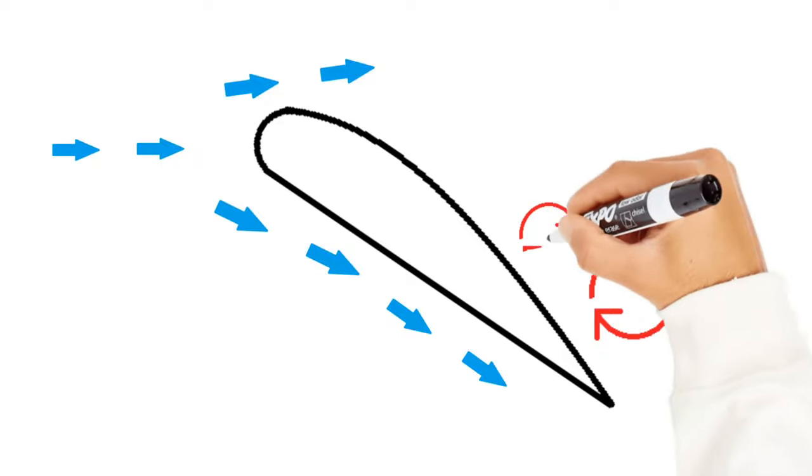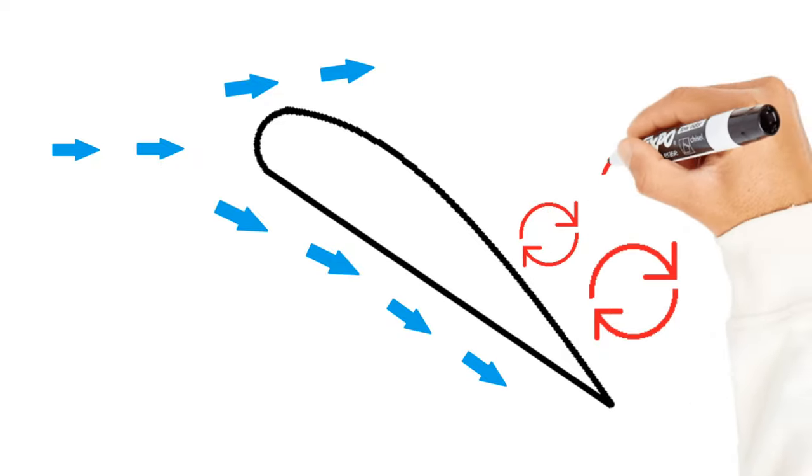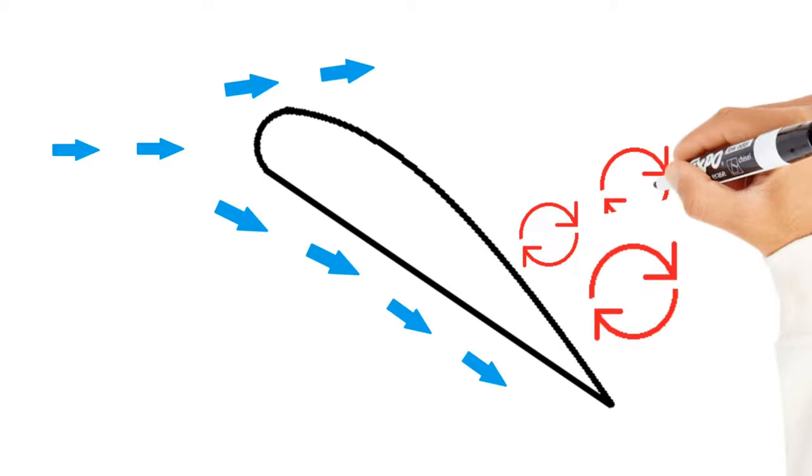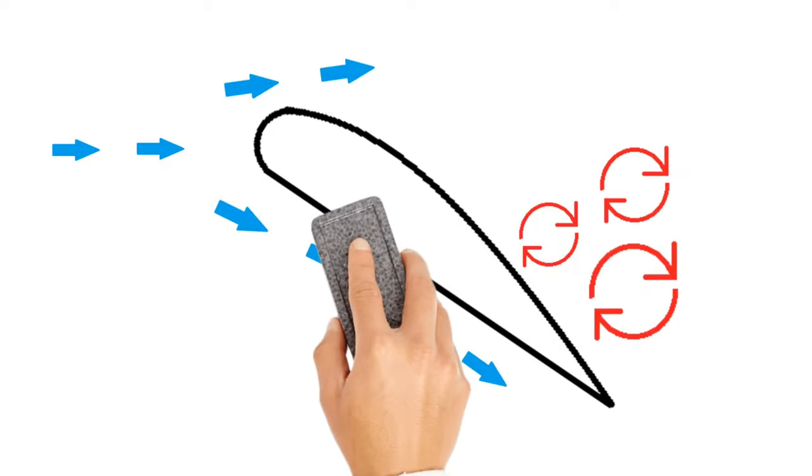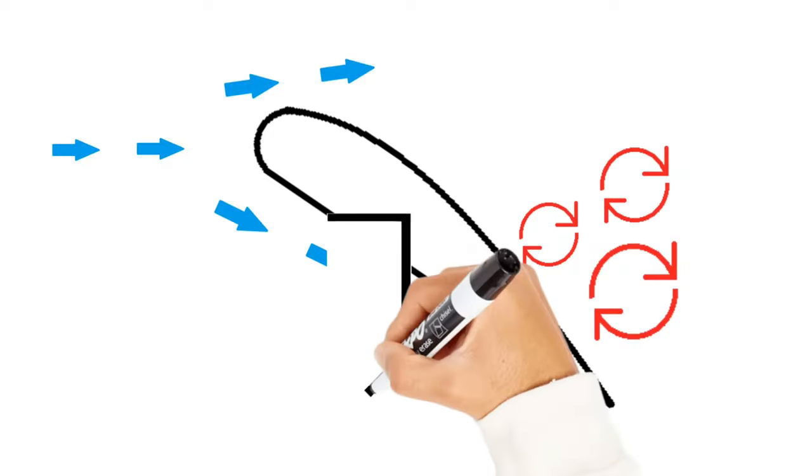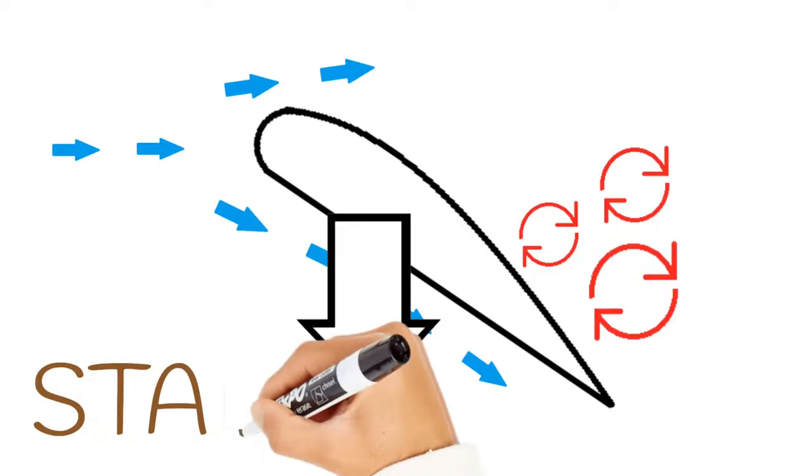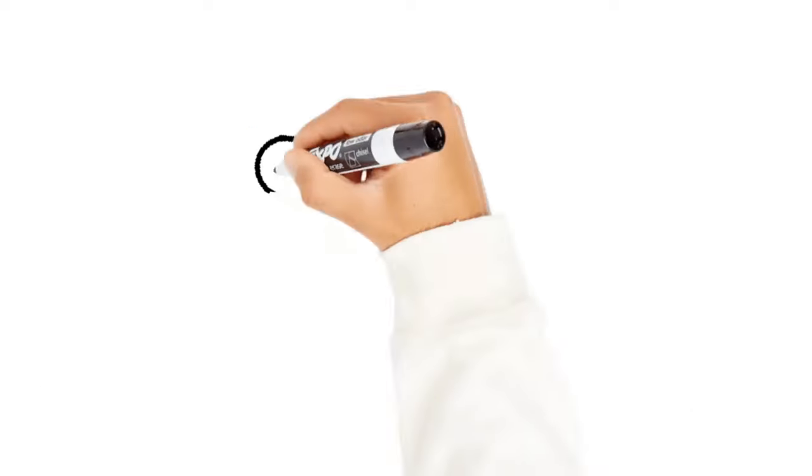If we increase the angle of attack even more, there'll come a point in time when the lift that a wing produces can no longer support the weight. When that happens, you'll get a rapid loss in lift, and this loss of lift is known as a stall.